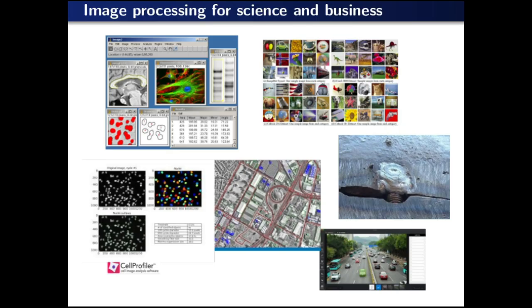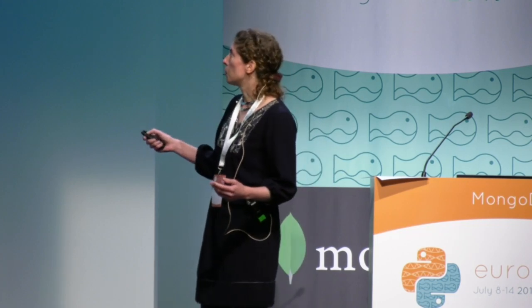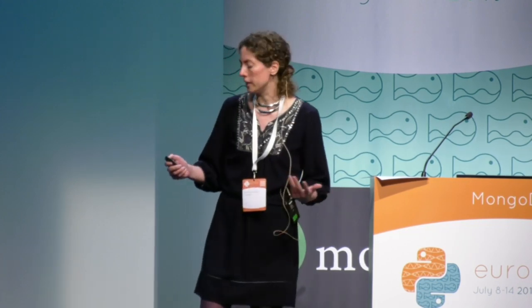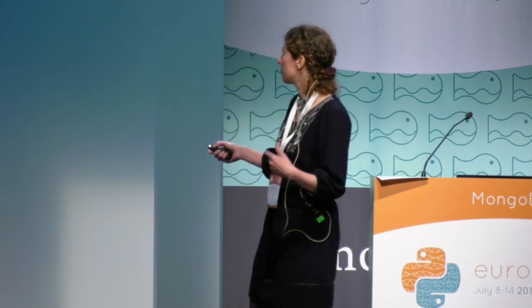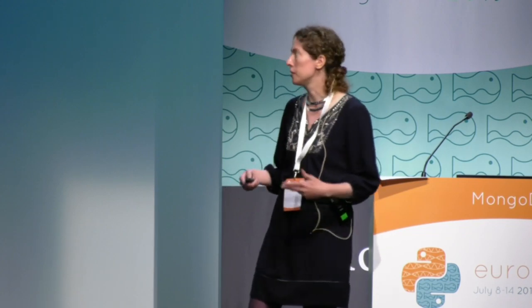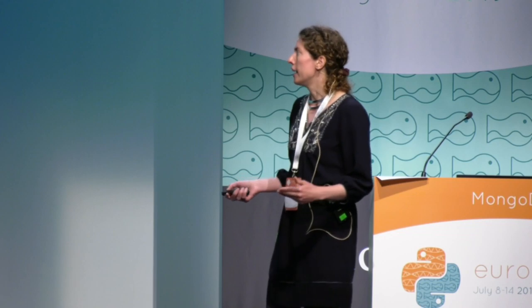In the PyData community, images are a very common form of data, and you have needs for image processing in various domains of science and industry. For example, in biology where you have microscopy images, or for satellite imaging, quality inspection, but also for autonomous cars where you want automatic segmentation. The needs are very different — they span a very large number of fields, and in all these fields you have various tools which exist.